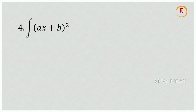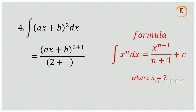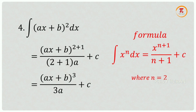Question number 4: integration of (ax + b) whole squared dx. Using the formula — integration of x power n dx equals x power n+1 divided by n+1 plus c — where n equals 2, the required answer is (ax + b) cubed divided by 3a plus c, where the denominator a is the internal derivative.